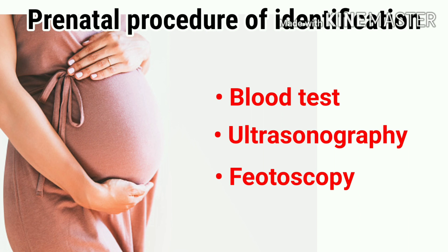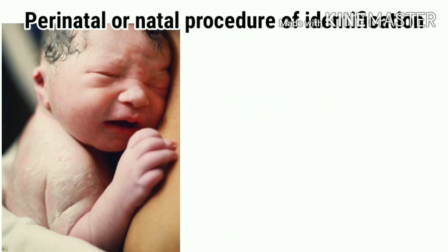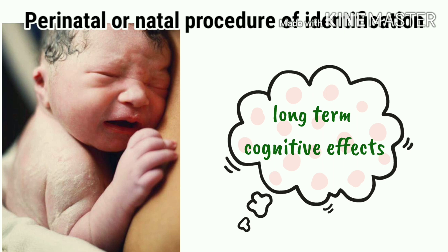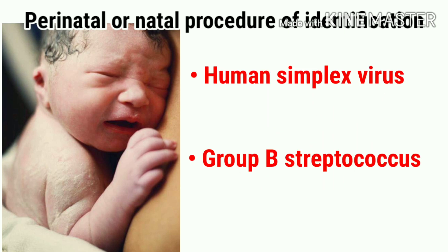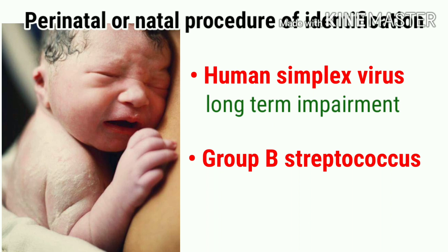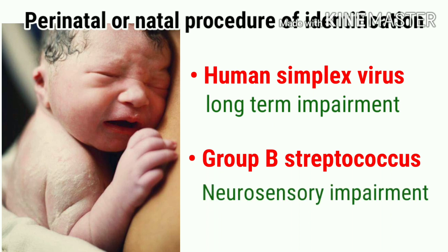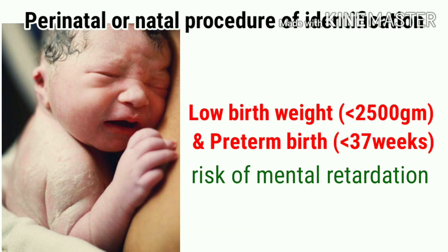Fetoscopy is done in the second trimester of pregnancy for diagnosing physical anomalies or metabolic disorders. Perinatal infections have long-term cognitive effects, such as infections caused by neonatal herpes simplex virus or group B streptococcus. Herpes simplex virus can cause long-term impairments such as mental retardation, while group B streptococcus can cause meningitis, a neurosensory impairment. Low birth weight and preterm birth also increase the risk of having MR.